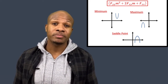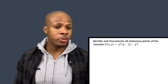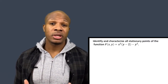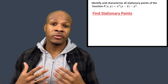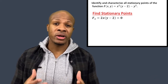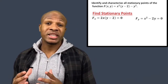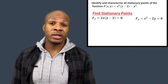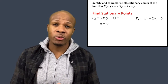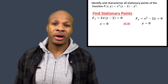Let's do an example. The problem says: identify and characterize all stationary points of f(x,y) = x²(y − 2) − y². First, we find stationary points by setting all first-order derivatives equal to zero. The partial derivative with respect to x is 2x(y − 2) = 0, and the partial derivative with respect to y is x² − 2y = 0. If x = 0, the first equation is satisfied. Plugging x = 0 into the second equation gives 2y = 0, so y = 0. That gives us our first stationary point: (0, 0).